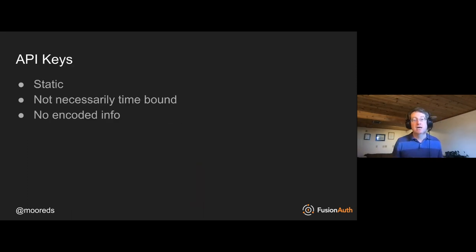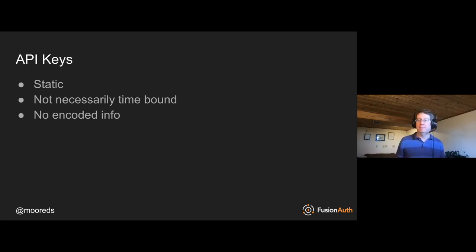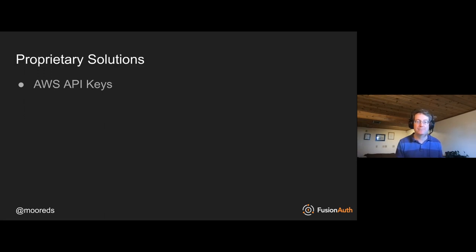Let's briefly talk about some alternatives to JWTs. You can use API keys to control access between microservices, but they're static unless you build in a rotation period, not necessarily time-bound unless you build that in, and they can't encode additional metadata — they're just a string that says yes or no, without gradations of permissions. Another option is a proprietary solution; AWS has built their own API key format that is time-bound and actually bound to time, region, and service as well.